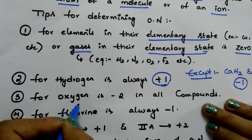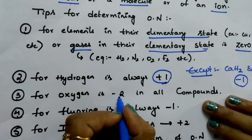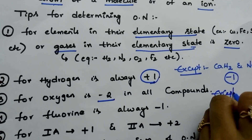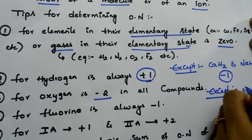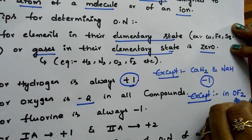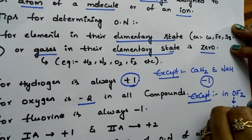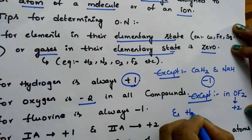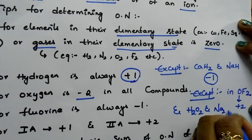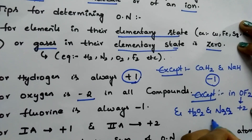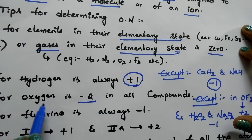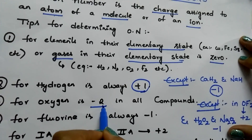Tip number 3. For oxygen, the oxidation number is minus 2. Except in OF2, the oxidation number of oxygen is plus 2. And in peroxides like H2O2 and Na2O2, the oxidation number of oxygen is minus 1. Except these two cases, the oxidation number of oxygen is always minus 2.